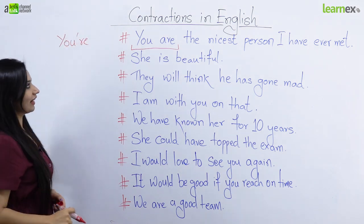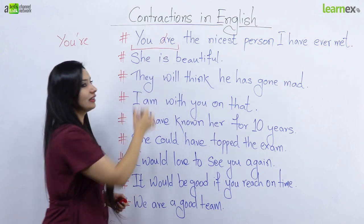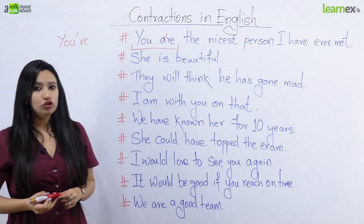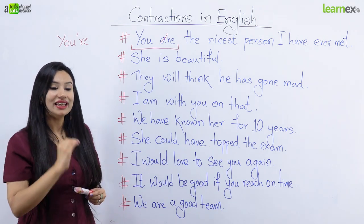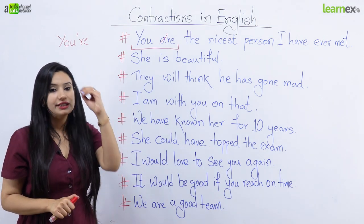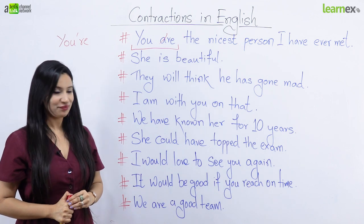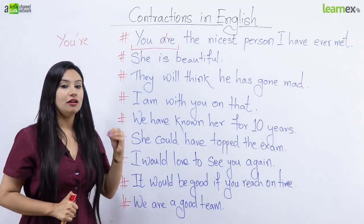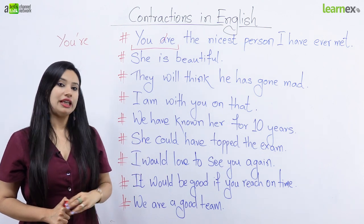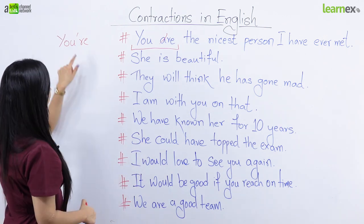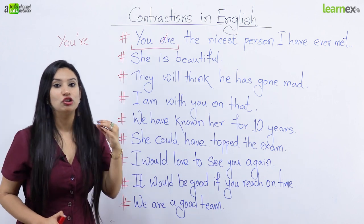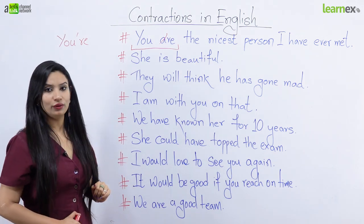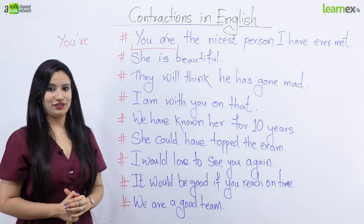Agar aapne notice kiya hai, yahan pe maine 'a' ko hata diya, kyunki maine 'a' ki jagah par apostrophe lagai hai. Jis bhi sound ko hum pronounce nahi karte contraction mein, us ki jagah par apostrophe lagta hai. Jaisa ki maine kaha you are, aur contraction mein maine kaha you're. Toh maine 'a' ko nahi bola, isliye maine 'a' ki jagah par apostrophe lagaya aur bola you're. Ab is sentence ko dobara bolte hain: You're the nicest person.